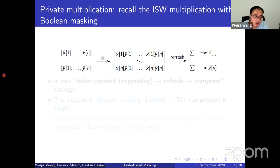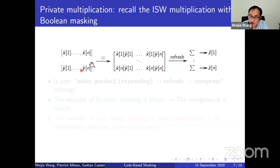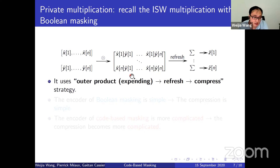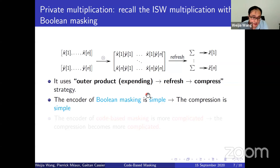To illustrate private computation with code-based masking, let's start with Boolean masking and the ISW multiplication, which is quite famous in the side-channel countermeasures community. The inputs are two vectors of shares. First, it computes the outer product of the two input shares. Then we have to refresh this matrix for security. Finally, we sum the columns of the matrix to yield several shares as a result. This scheme uses a multiply, then refresh, then compress strategy. In our construction, we generalize this strategy to code-based masking.